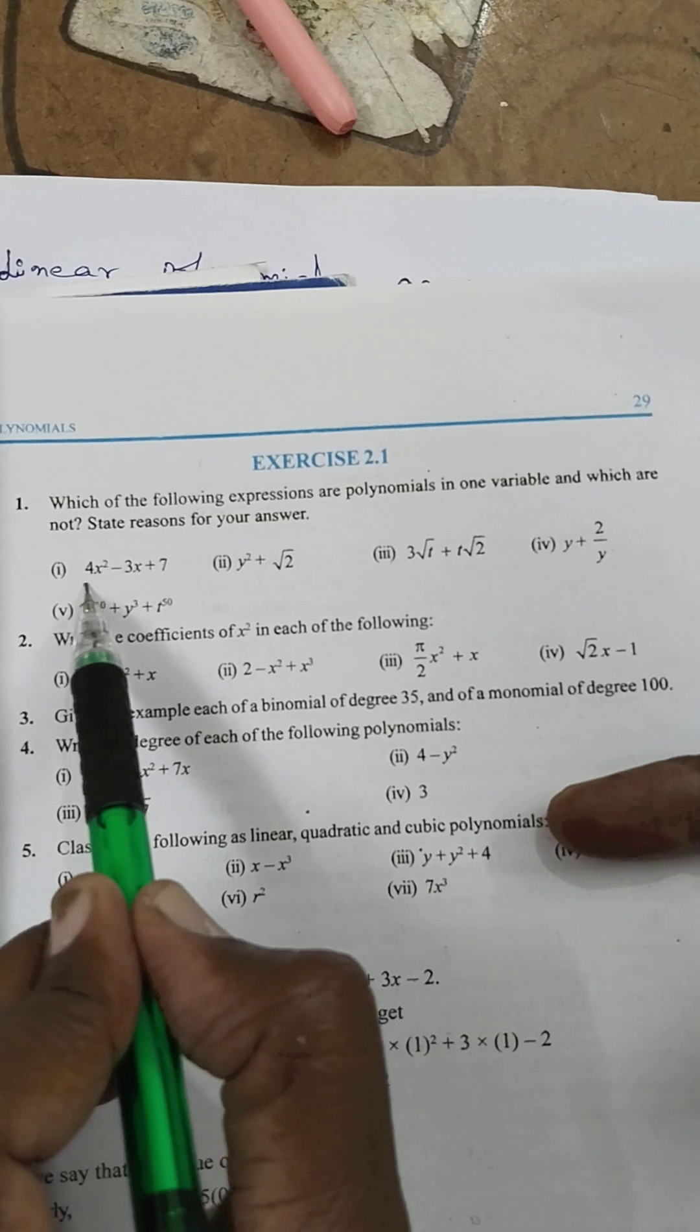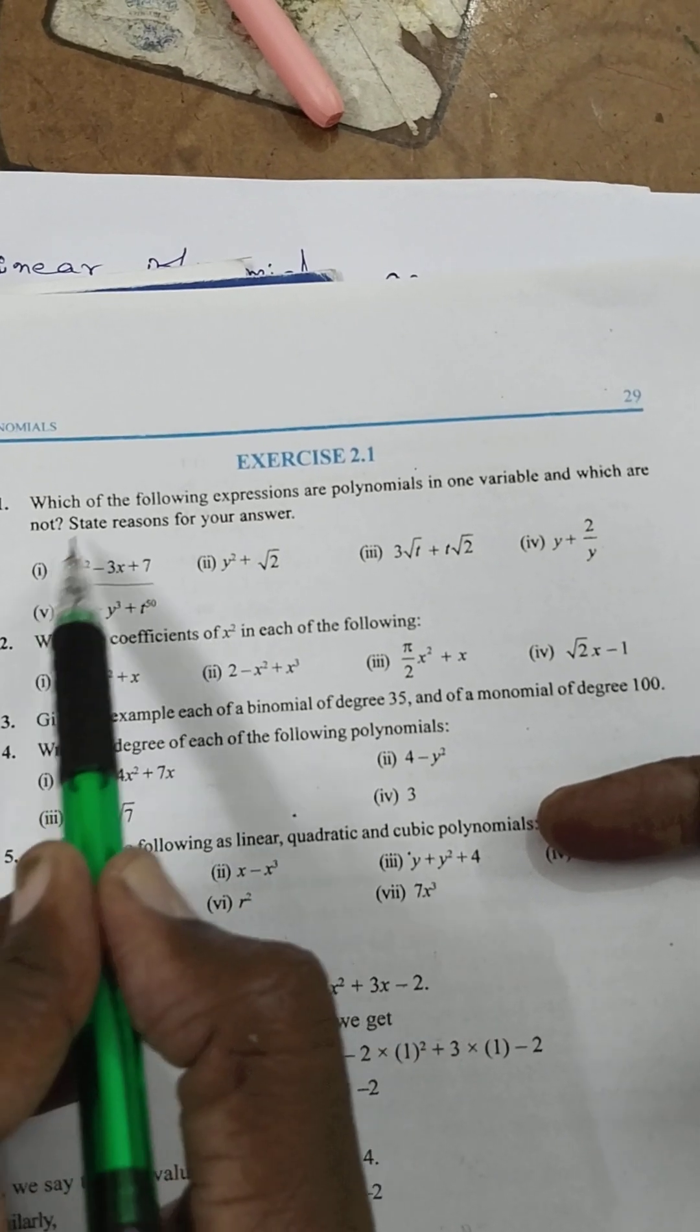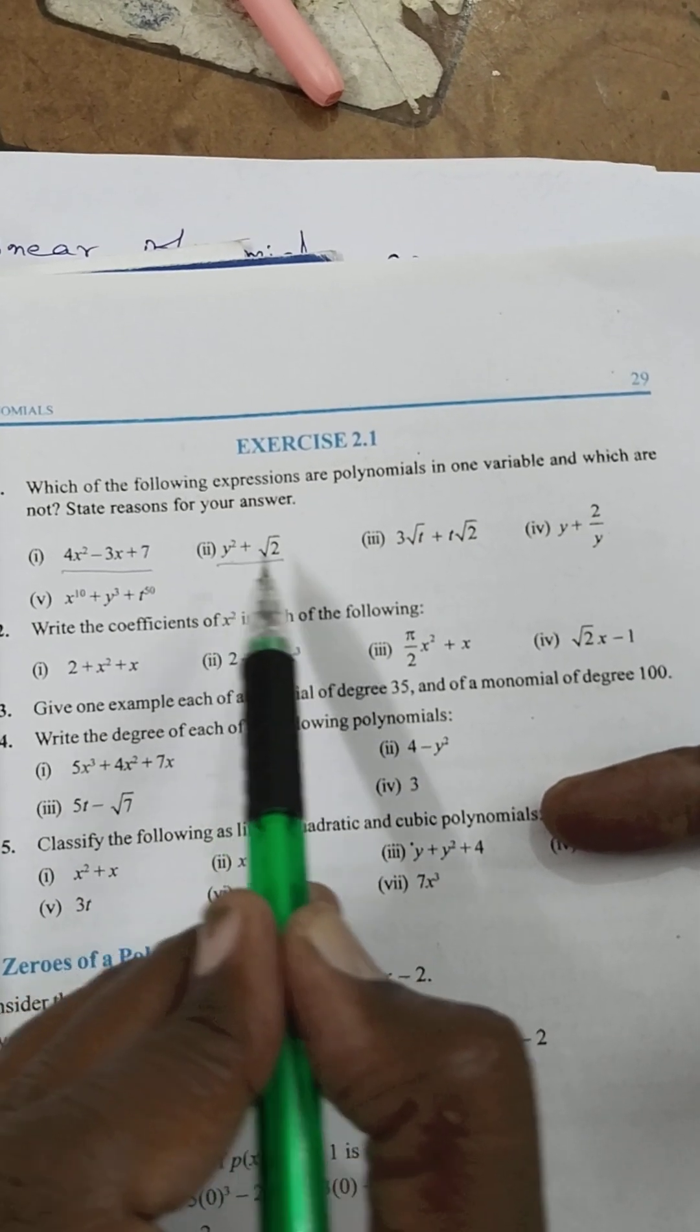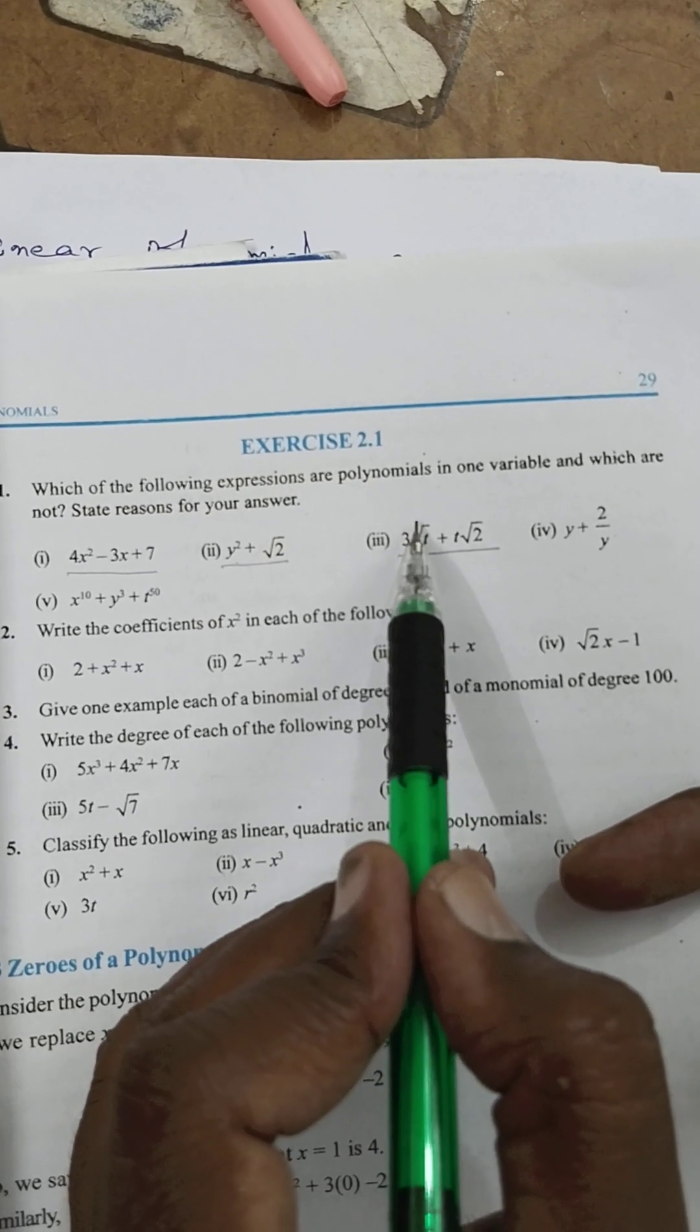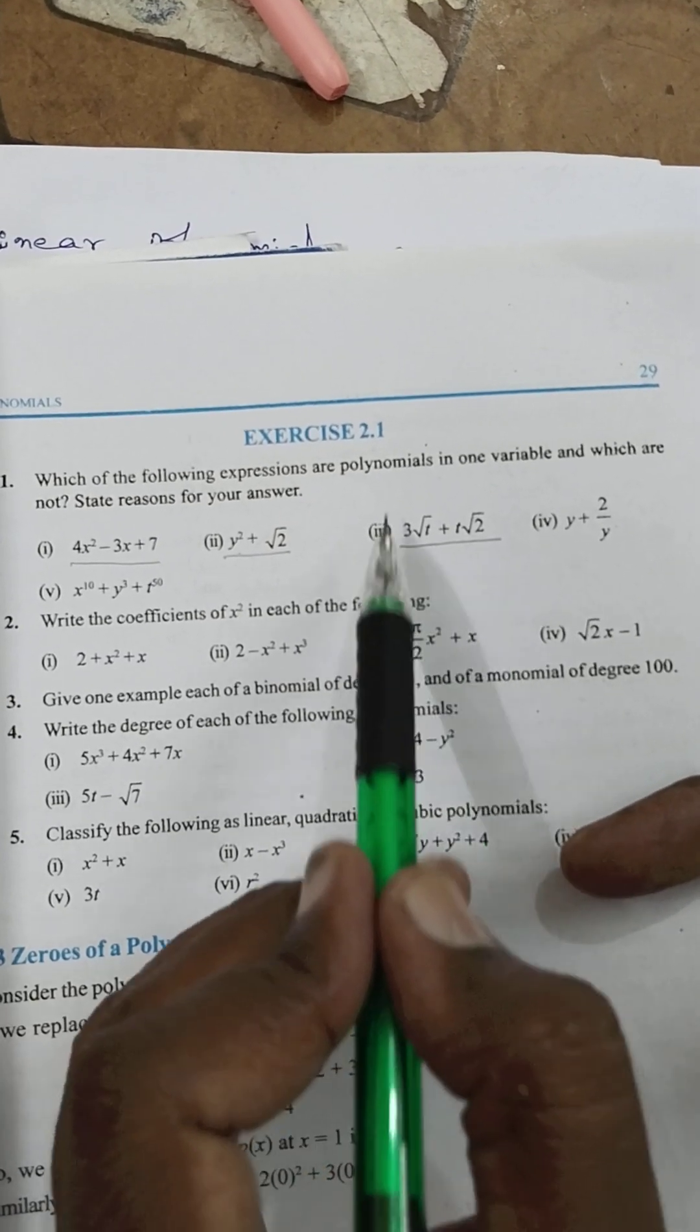This one is the polynomial. This one is the polynomial, single variable. This is not polynomial. Already I said root to power minus, it is not a polynomial.